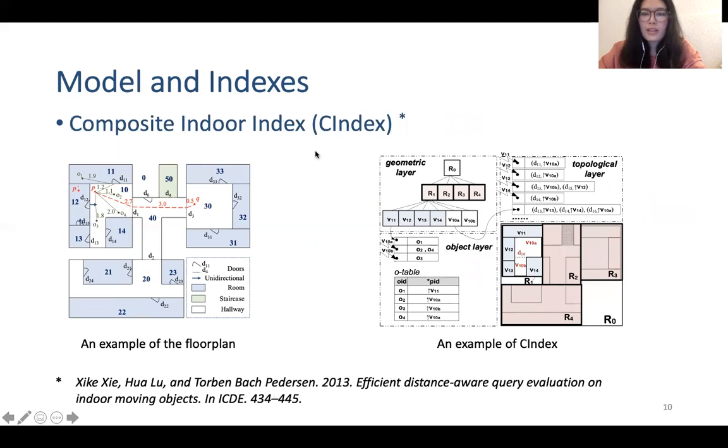Then C index. It contains three layers. The first one is geometric layer, which is a kind of R-star tree. Then topological layer, which stores topological information of indoor space. Then object layer maintains object information. This index is mainly for moving objects.